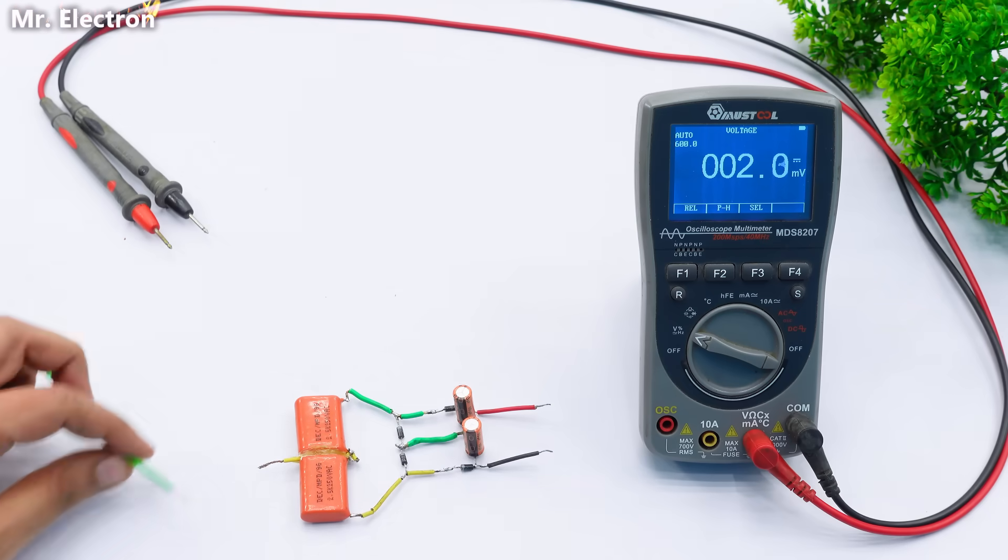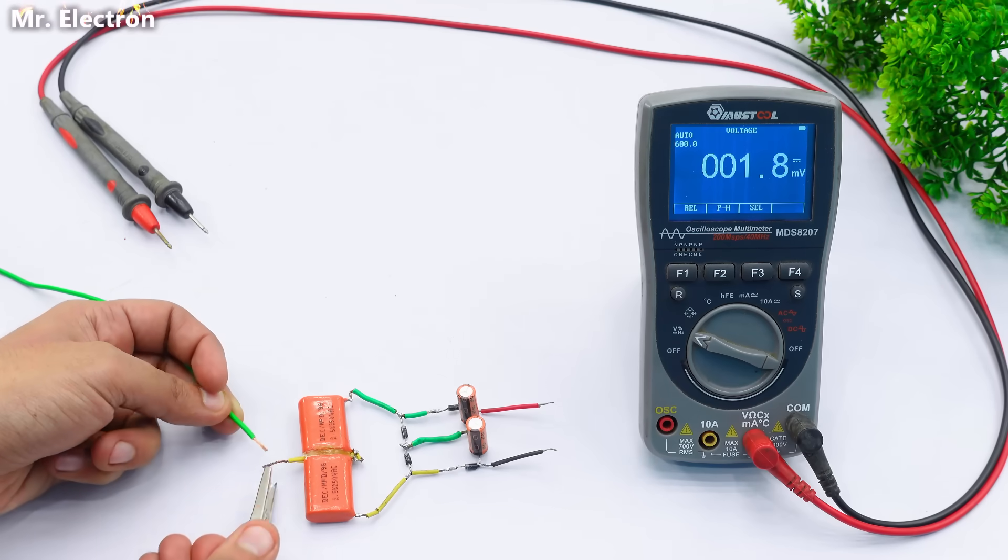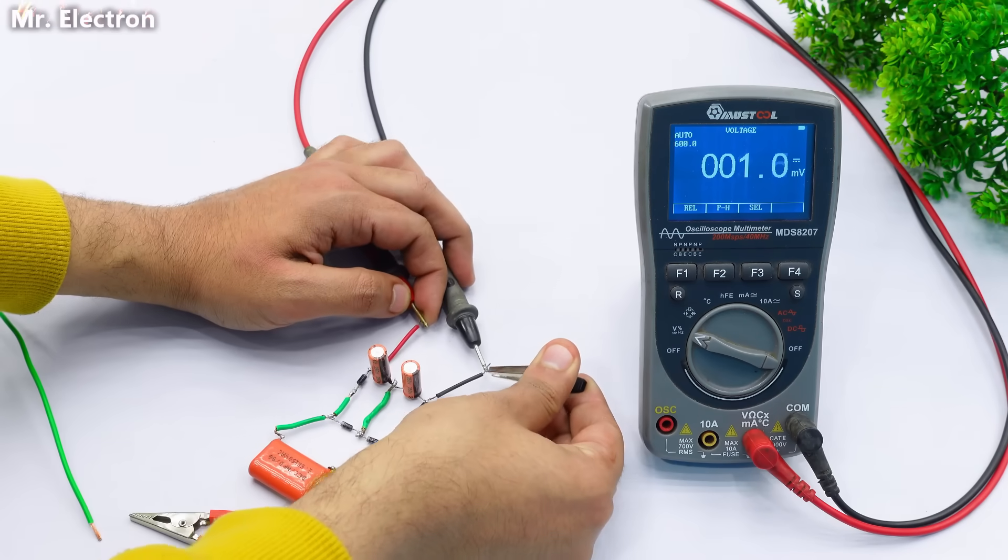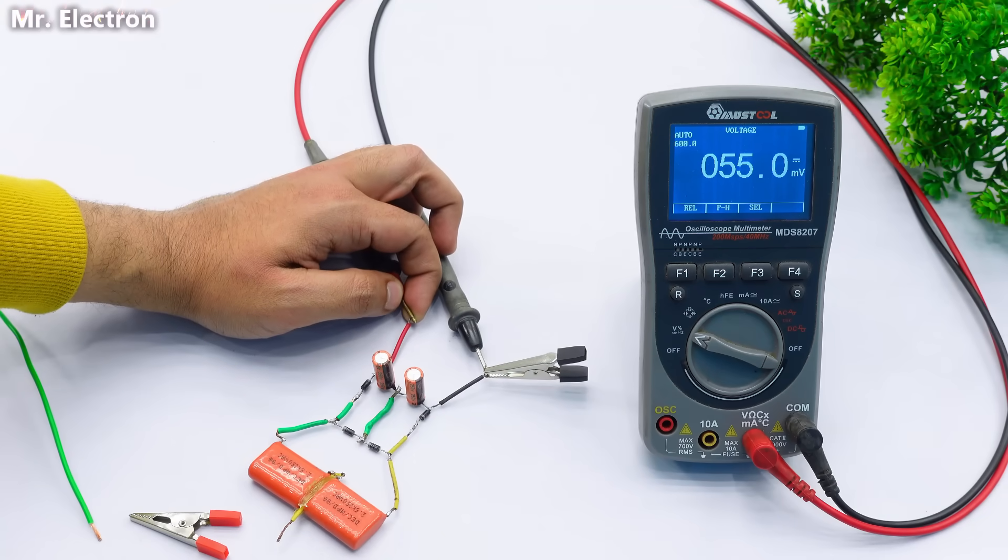Now the meter is showing 0 volts DC. And here I'm going to connect the antenna wire. Yeah but let's first connect these wires. You can see it is showing 53 millivolts. So let's discharge it first.